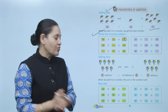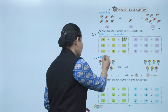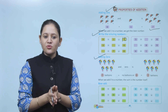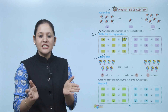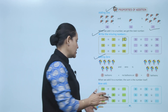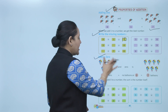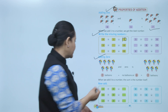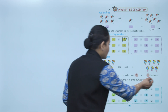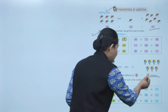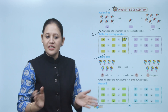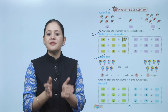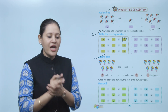Next is adding zero. Here seven balloons plus zero balloons means no balloons. If we add zero to the given number we will get the same number. Seven balloons plus no balloons equals seven balloons. When we add zero to a number, the sum is the number itself.